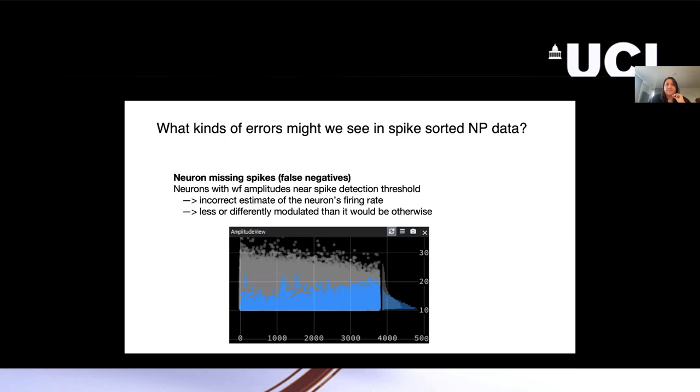This is really a repeat of what Julie just said, but I'll highlight a couple of different errors that we see in spike-sorted Neuropixels data. The first is this false negatives idea of neurons that are missing spikes. This is just a screenshot from Phy here. When you're picking your quality metrics, think about what impact not having that quality metric would have on your data and whether that's relevant for the analysis you're doing.